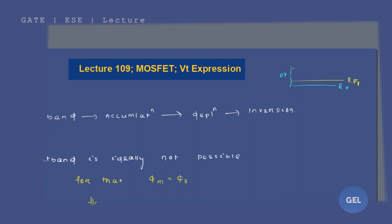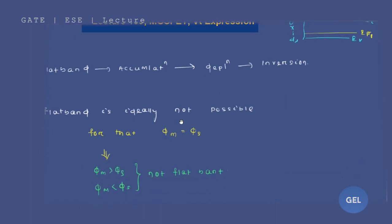This is your condition for flat band. So getting this condition is not easy because the work function of metal and the work function of semiconductor are never the same. This is your oxide layer.